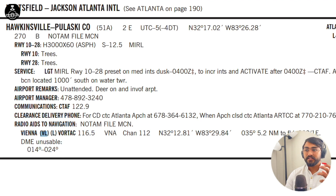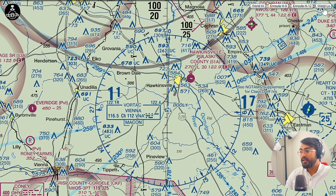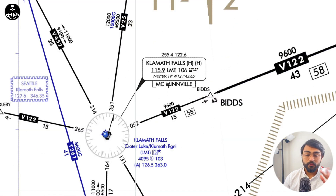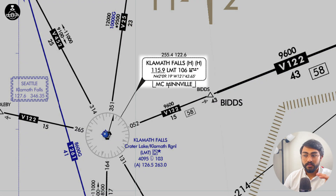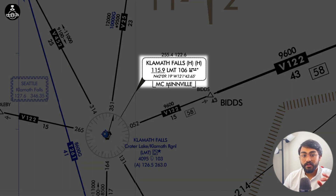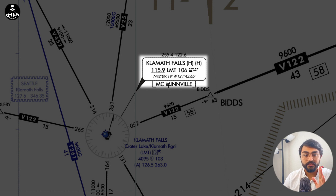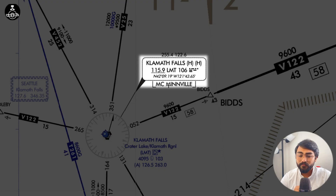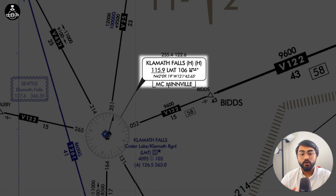On a VFR sectional chart you won't find the service volume, so you'll have to look into the chart supplement, where you'll see whether it is a VOR Low service volume or not. The easier way is to look at the low enroute chart. Now comes the bonus part: if you look at Klamath Falls in the frequency box of the low enroute chart as well as the chart supplement, in the service volumes you had an H and another H — two class letters, both H.